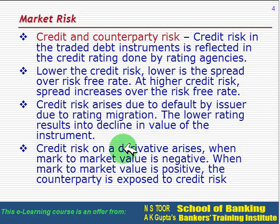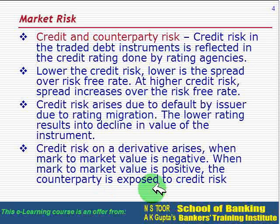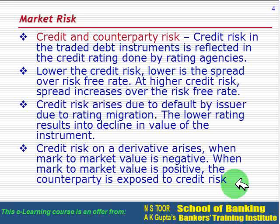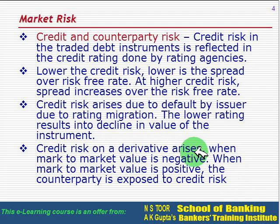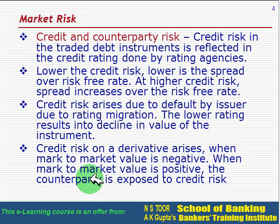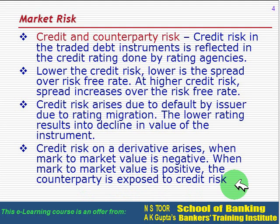Credit risk on derivatives arises when the mark-to-market value is negative. When the mark-to-market value is positive, the counterparty is exposed to credit risk. So credit risk on a derivative arises when mark-to-market value is negative, and when mark-to-market value is positive, the counterparty is exposed to credit risk.